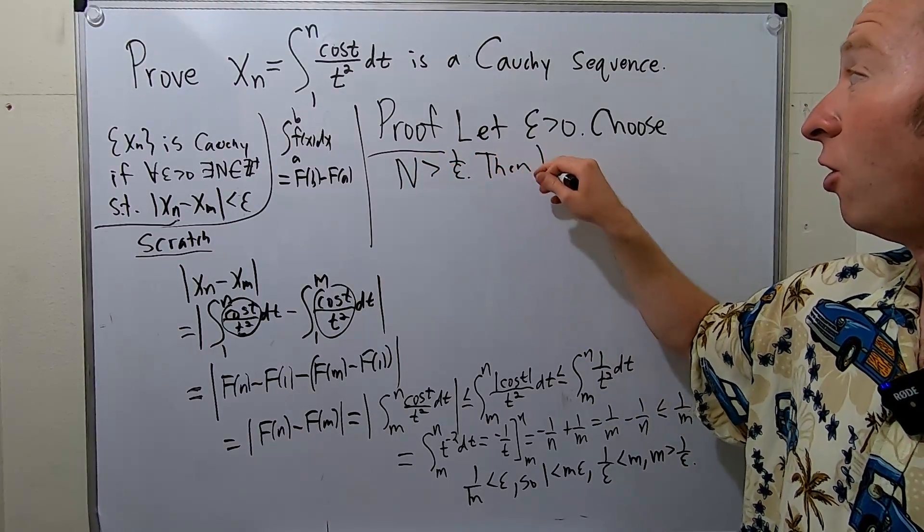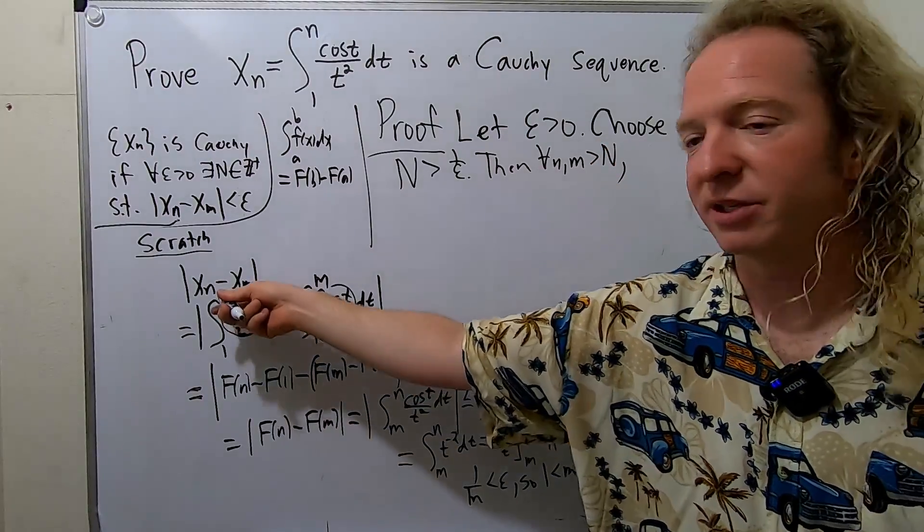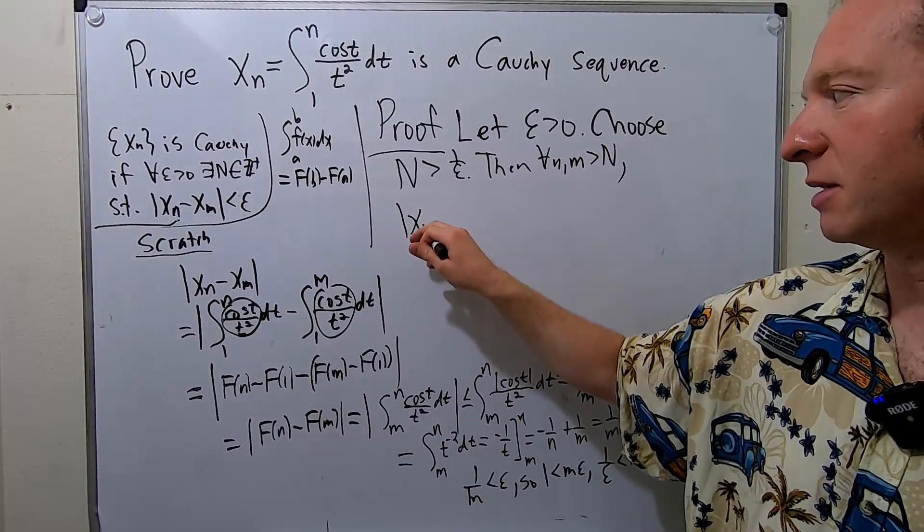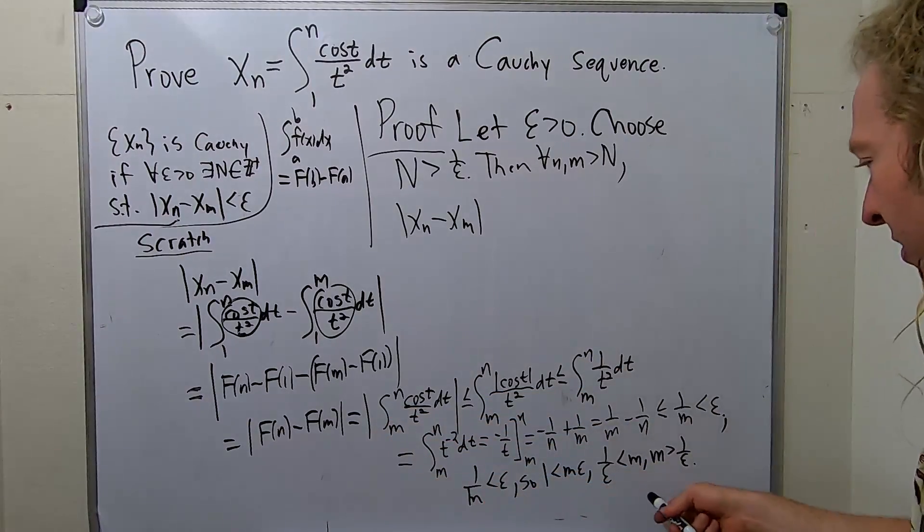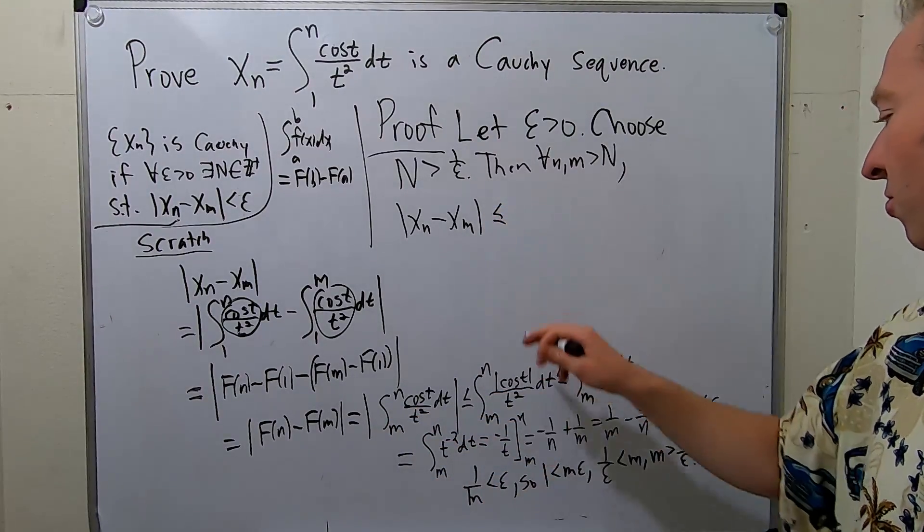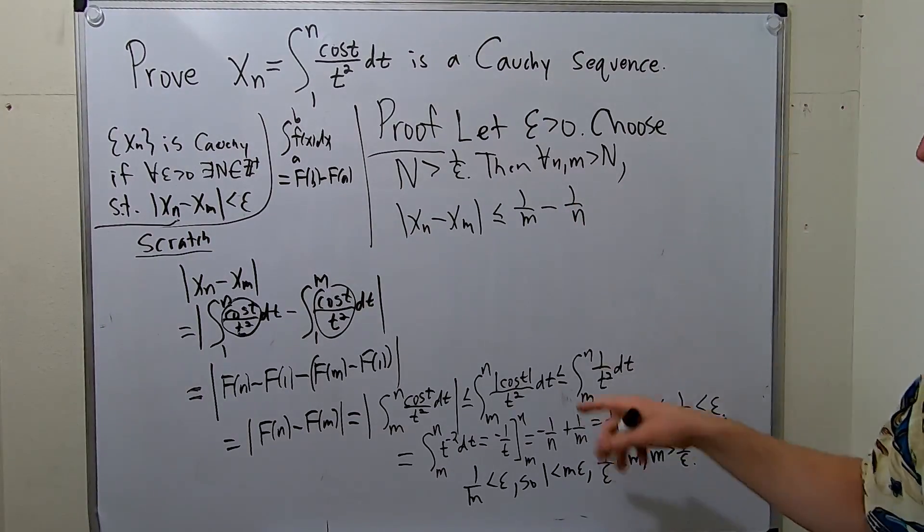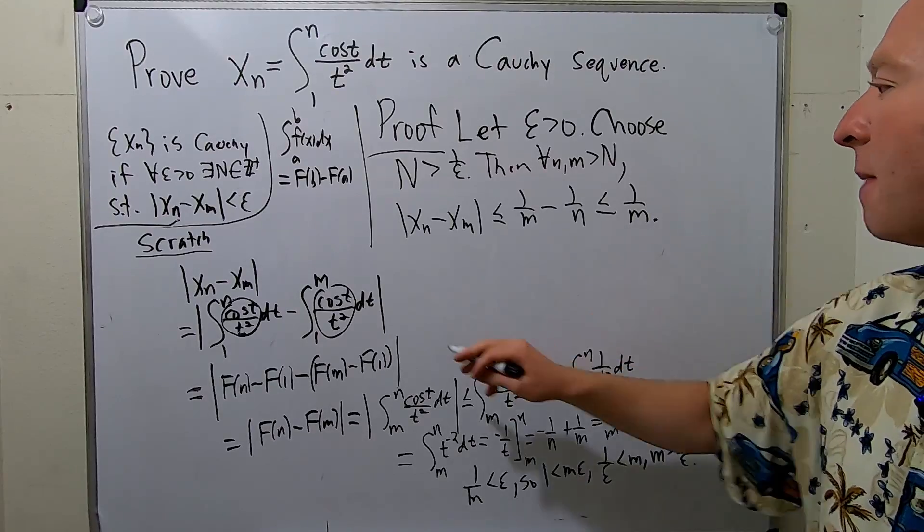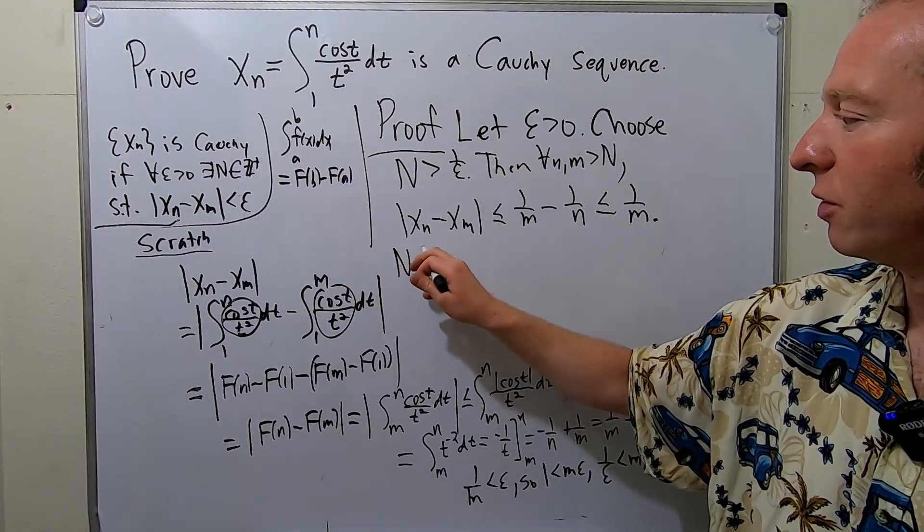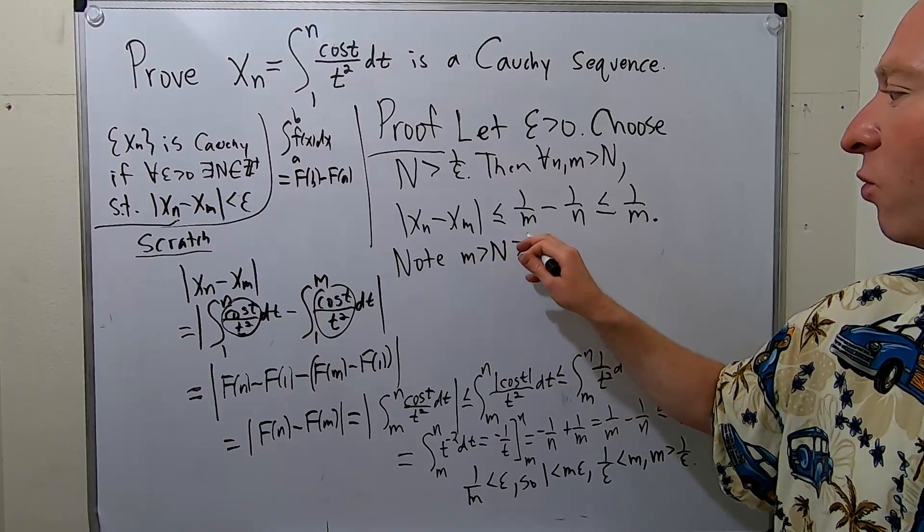Then, for all little n and m bigger than capital N, we're going to look at this distance here. |x_n - x_m|. And we know, using some math, that this is less than or equal to 1/m - 1/n. And we know that this is less than or equal to 1/m. And then, let's be a little pro here. So, note, m is bigger than N, which is bigger than 1/epsilon.